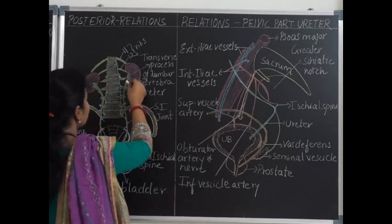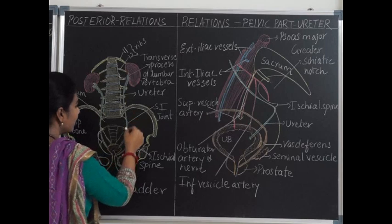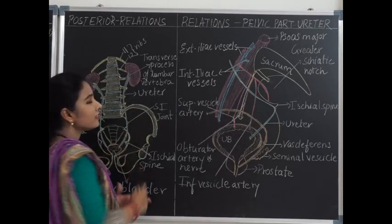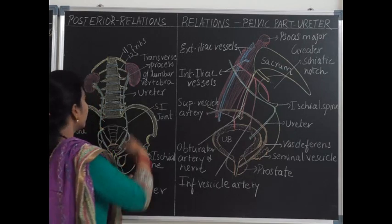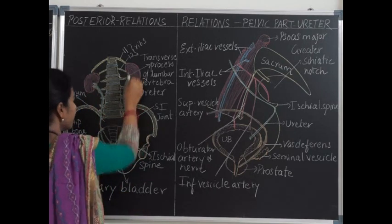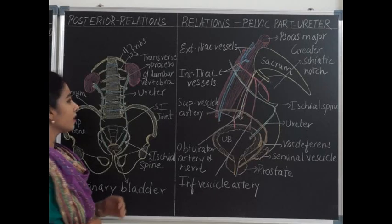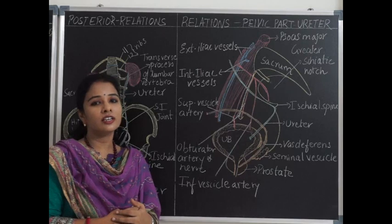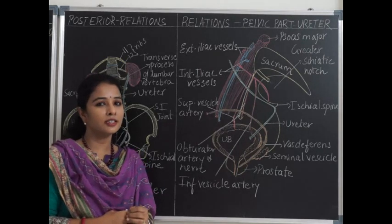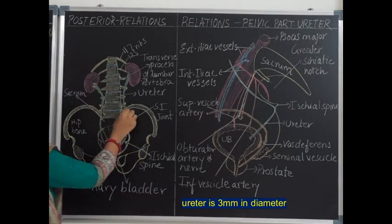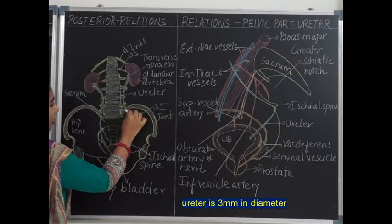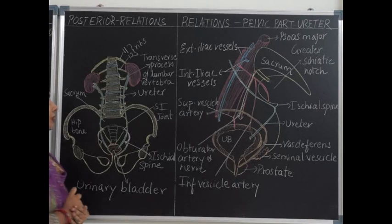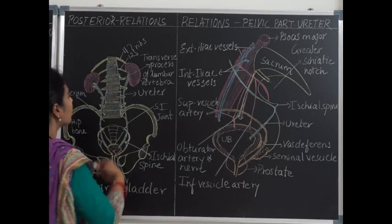The ureters are a continuation from the hilum of the kidney and run downwards towards the urinary bladder. They are thick muscular wall tubes that convey urine from the kidney to the urinary bladder. Approximately, the length of the ureters is around 10 inches, that is 25 centimeters. The proximal 5 inches lies in the abdomen and the lower 5 inches lies in the pelvis.